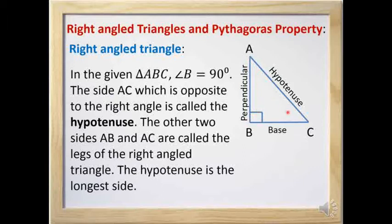The other two sides — side AB and side BC — are called the legs of the right angle triangle. One of the legs is called the perpendicular of the right angle triangle, and the other leg is called the base of the right angle triangle.